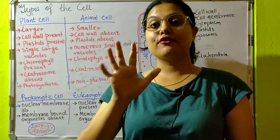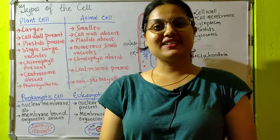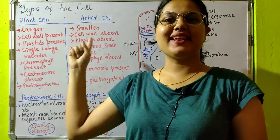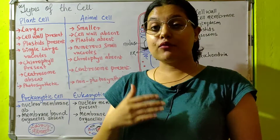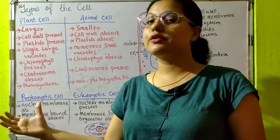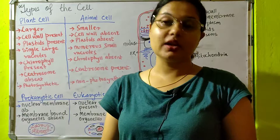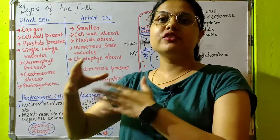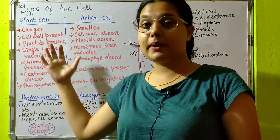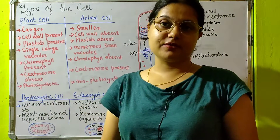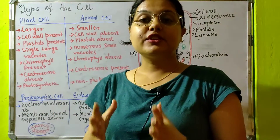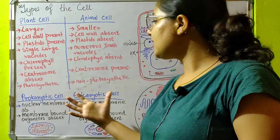Dear students, we are on Part 5 of the chapter Cell Structure and Function. In this video we will be comparing plant cell and animal cell. I also want to give you more information about another type of cell — prokaryotic cell and eukaryotic cell. That is the reason I have changed the topic name to 'Types of Cell,' because I am bringing the comparison between two different types of cells.